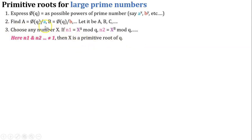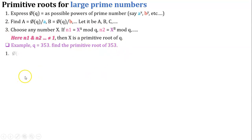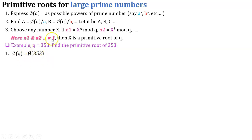Let us take an example: q equals 353. Find the primitive root of 353. As per step 1, phi(q) equals phi(353). Since 353 is prime, we use the nearest composite number 352. So phi(q) equals 352 equals 2 raised to 5 times 11 raised to 1. From step 1 we get two prime numbers: small a equals 2 and small b equals 11.